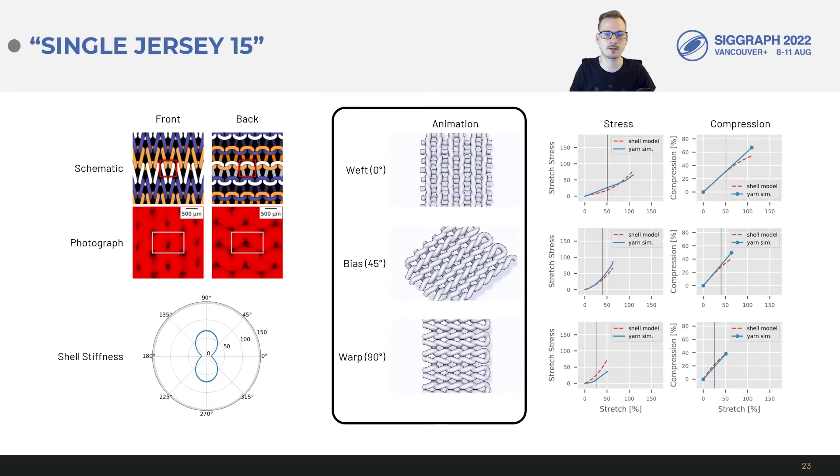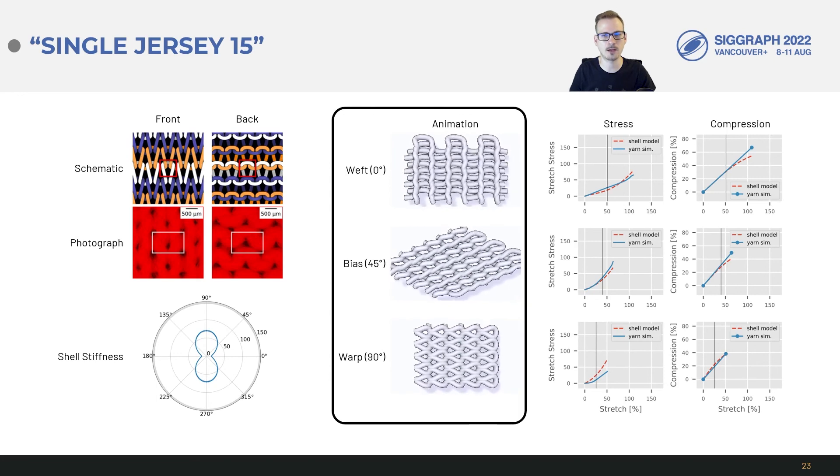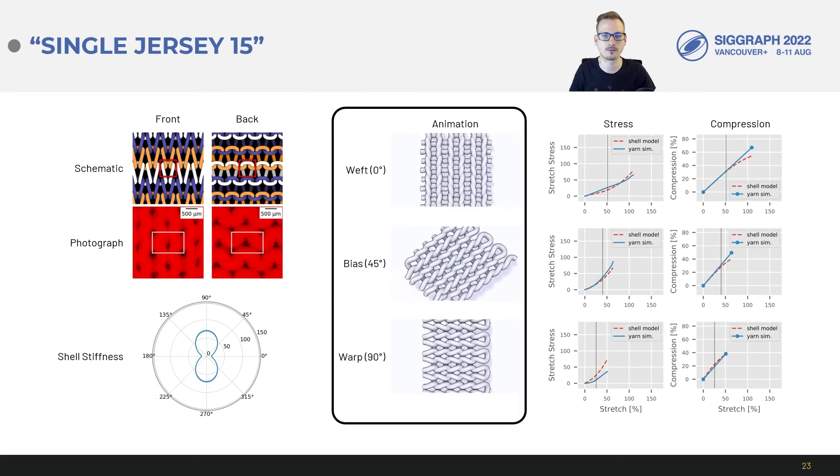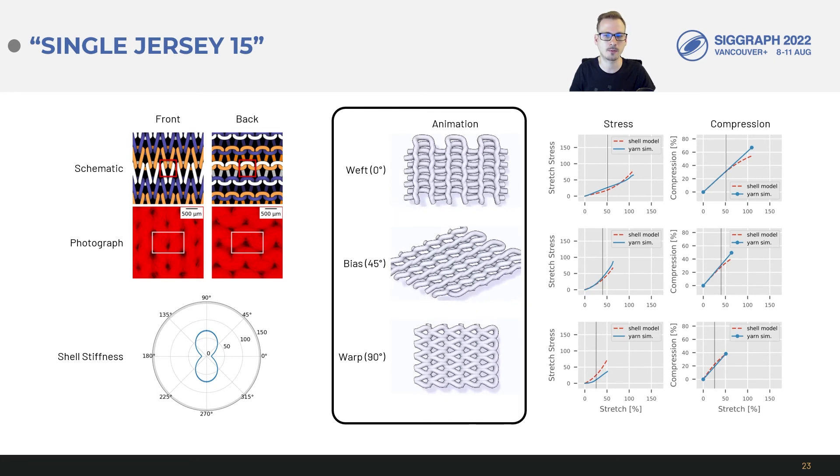In the animations here we can get some understanding of how the pattern topology generates anisotropy. The loops are such that at 0 degrees it has an easier time pulling on adjacent rows. Of course these were simulated with the optimized yarn coefficients.